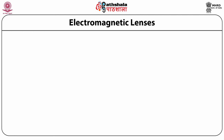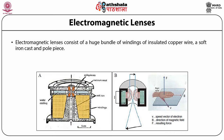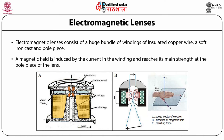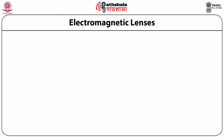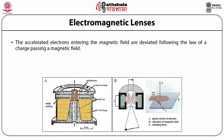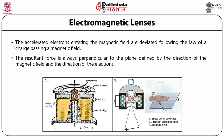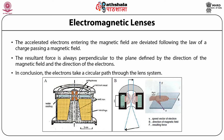Electromagnetic lenses consist of a large bundle of windings of insulated copper wire, a soft iron cast, and a pole piece as shown in figure A. A magnetic field is induced by the current in the winding and reaches its main strength at the pole piece of the lens. The accelerated electrons entering the magnetic field are deviated following the law of a charge passing through a magnetic field. The resultant force is always perpendicular to the plane, so the electrons take a circular path through the lens system.